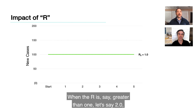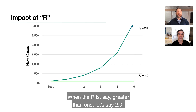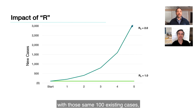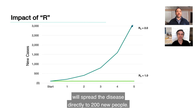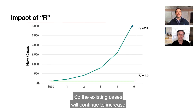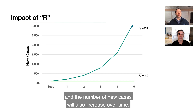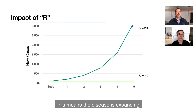When R is greater than 1, say 2.0, with those same existing 100 cases, those 100 people while infectious will spread the disease directly to 200 new people. So the existing cases will continue to increase, and the number of new cases will also increase over time. This means the disease is expanding.